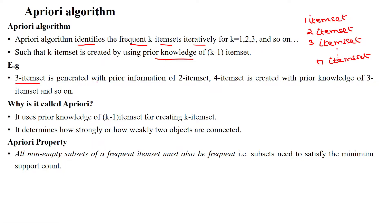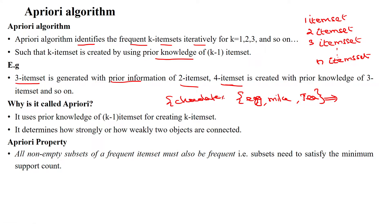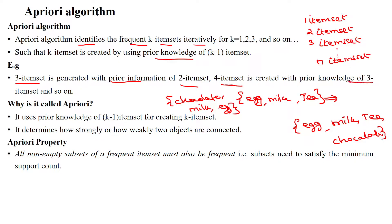For example, the third itemset is generated with the prior information of the two-itemset. A four-itemset example: egg, milk, and tea powder — this is a three-itemset. From this three-itemset, we may have chocolate, milk, and egg — so two three-itemsets exist. From these two three-itemsets, we can create the four-itemset: egg, milk, tea, and chocolate.